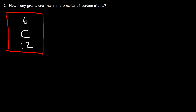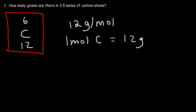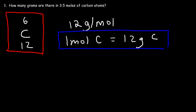You want to look for the larger of the two numbers, which is 12. So that's the molar mass of carbon — 12 grams per mole. This means one mole of carbon has a mass of 12 grams. This is your conversion factor; this is what you need to convert moles to grams. You need the molar mass.